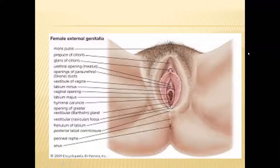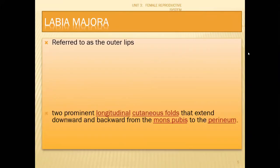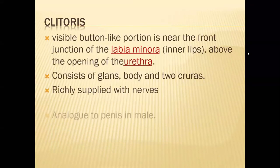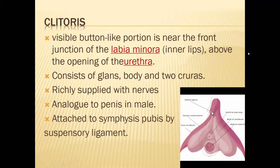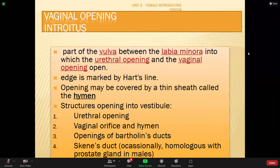The clitoris is a visible button-like structure in front of the urethral opening, present at the junction of the labia minora above the urethral opening. It consists of glans, body, and two crura. It is richly supplied by nerves and is analogous to the penis in males. It is attached to the symphysis pubis by the suspensory ligament.